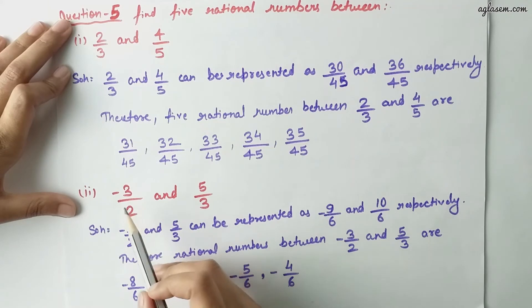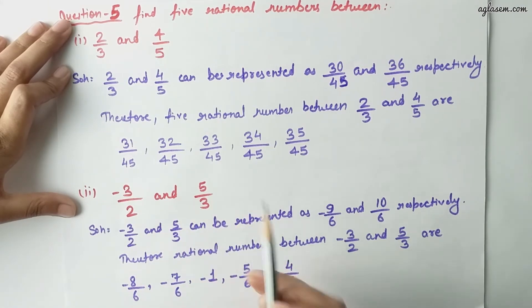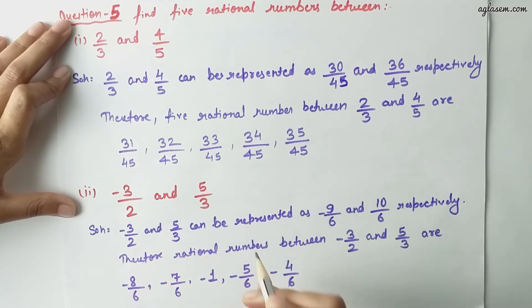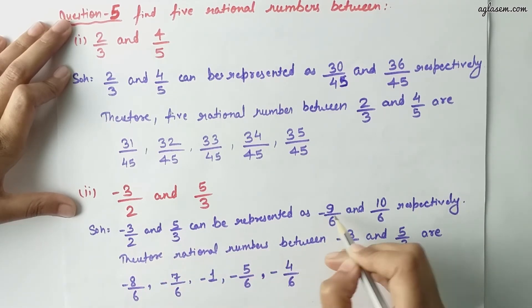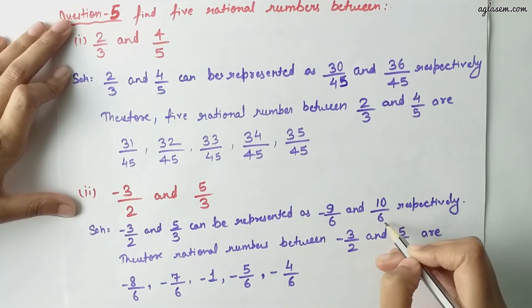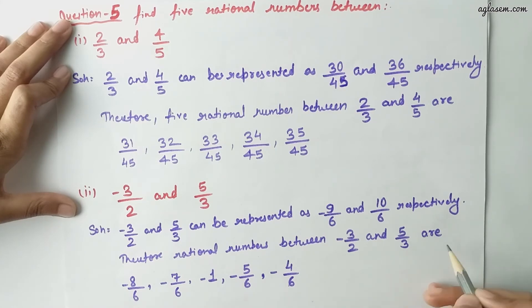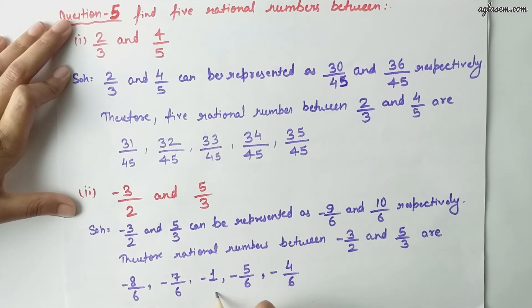The second part of the same question: we have minus 3 by 2 and 5 by 3. Minus 3 by 2 and 5 by 3 can be represented as minus 9 by 6 and 10 by 6 respectively. Therefore, rational numbers between minus 3 by 2 and 5 by 3 are minus 8 by 6, minus 7 by 6, minus 1, minus 5 by 6, and minus 4 by 6.